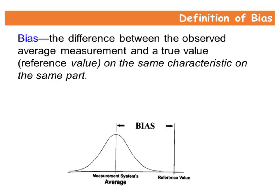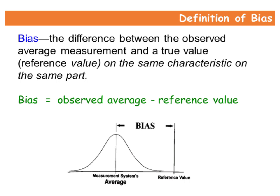What is bias? Bias is the difference between the observed average measurement and a true value or reference value on the same characteristic on the same part. Mathematically, the bias equals the observed average minus reference value.